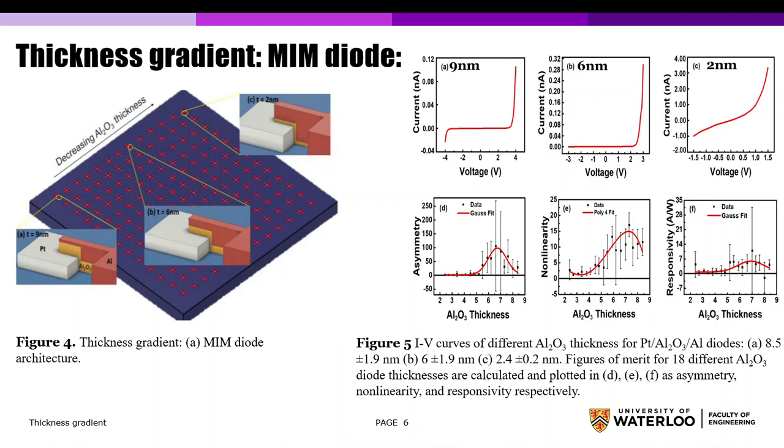The results show that current density increases as aluminum oxide thickness decreases, as shown in Figures A, B, and C.